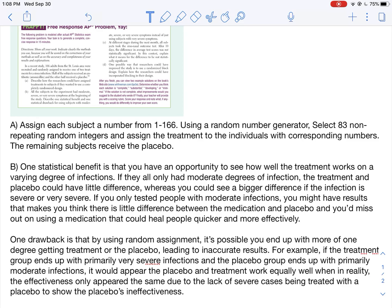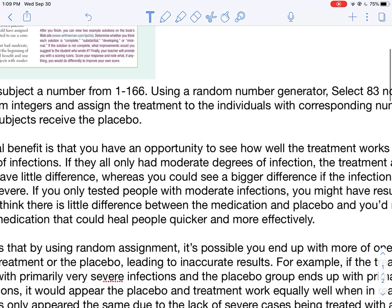So I covered both here. I gave a couple sentences for each of them. I think I might have gone with three sentences. You really don't want to go too crazy. You want to provide enough detail but you don't want to provide too much either. So I said that one statistical benefit is you have an opportunity to see how well the treatment works on varying degrees of infection. If you only had moderate degrees of infection, the treatment and placebo might appear to have little difference, whereas you'll probably notice a bigger difference if the infection is severe or very severe. And also if you only tested people with moderate infections, the results you get would make you think there's little difference between the medication and the placebo.